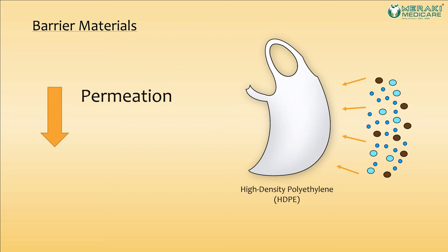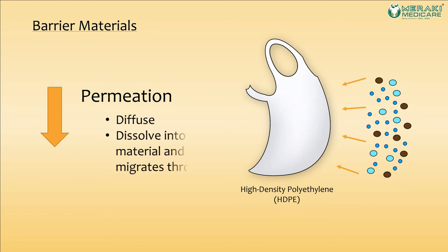Similarly, with the permeation of the PPE material — the lower the permeation of the material, the more difficult it will be for hazardous substances to diffuse or dissolve into the PPE material and migrate through it to cause any potential harm to an individual.